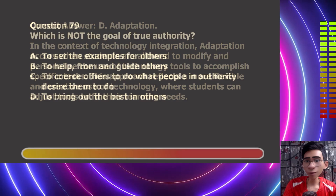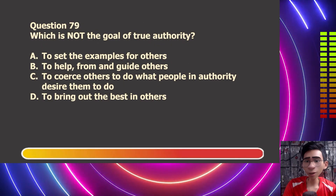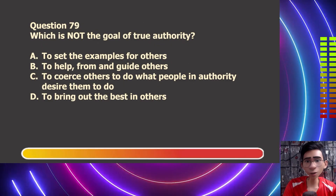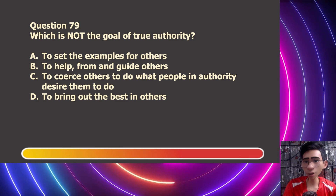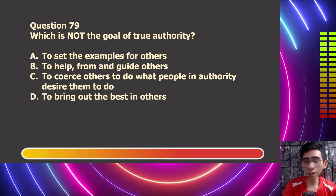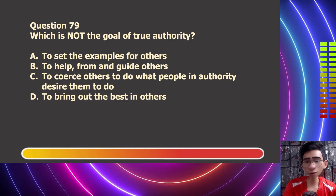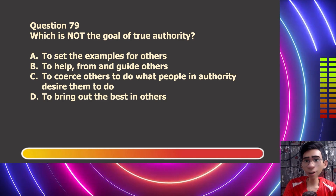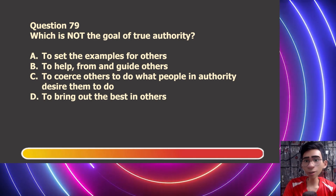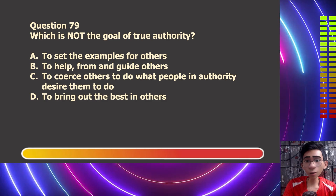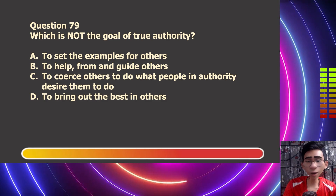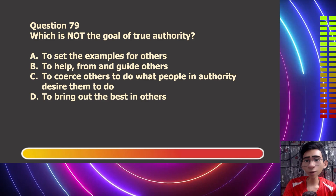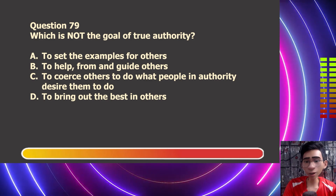Question number 79. Which is not the goal of true authority? Letter A, to set the example for others. Letter B, to help form and guide others. Letter C, to coerce others to do what people in authority desire them to do. Letter D, to bring out the best in others.